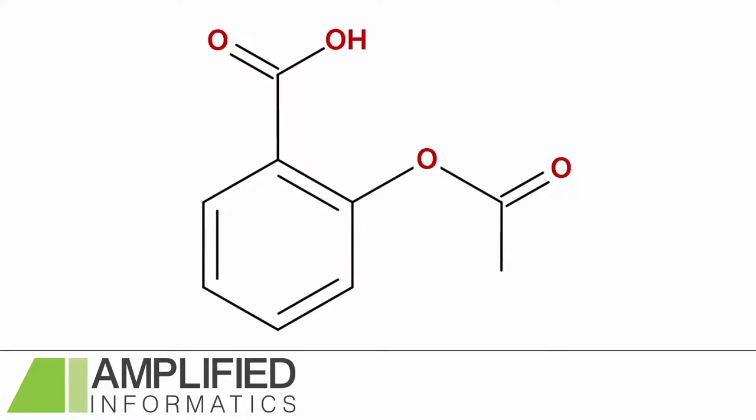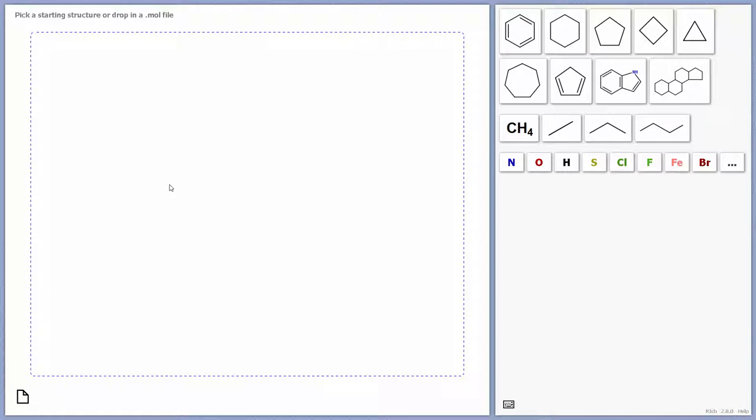The first and simplest of the structures I'm going to draw today is aspirin. If you have a chemical sketcher available, such as Pipette or another sketcher, now's a great time to pause the video and try drawing this structure yourself. To draw aspirin, I'm going to start with the benzene ring.